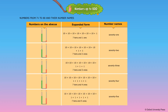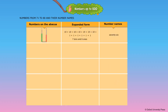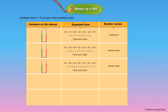7 tens and 6 ones — the number name is written as 76. 7 tens and 7 ones — the number name is written as 77. 7 tens and 9 ones — the number name is written as 79.